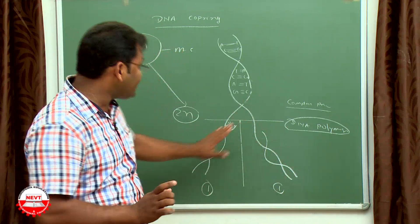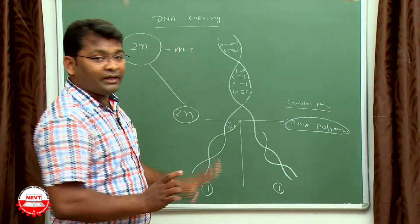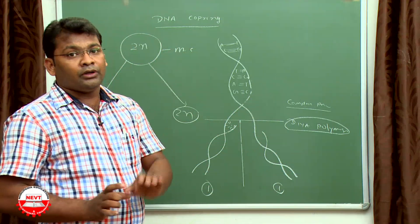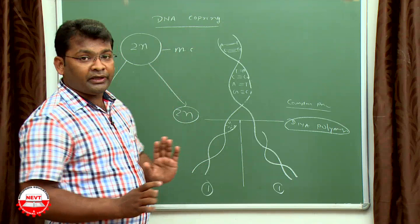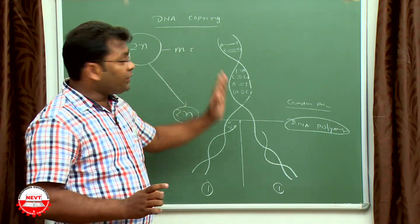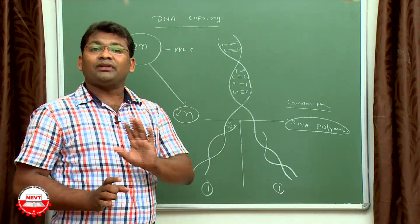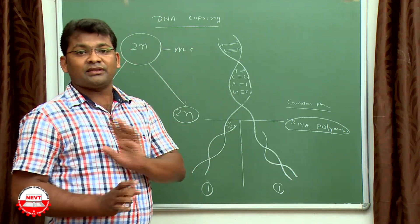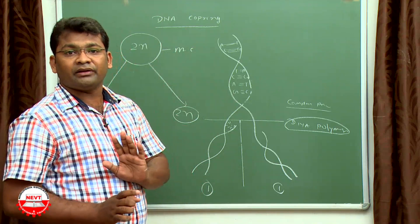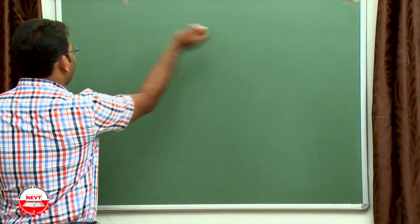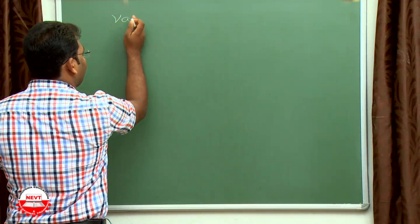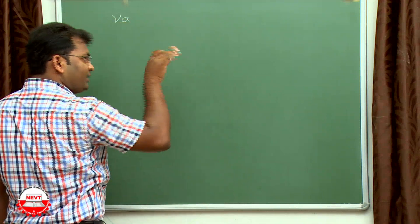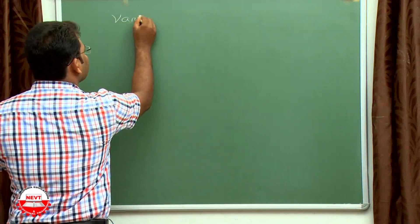Evolution is a group of accumulated variations that form evolution. Variation takes place due to changes in the genetical code during improper DNA copying, and that causes changes in the genotype. We will discuss variation more briefly in the relevant content section.